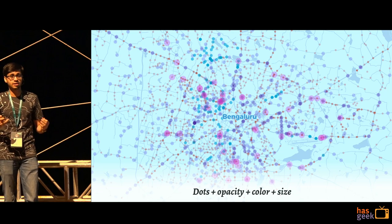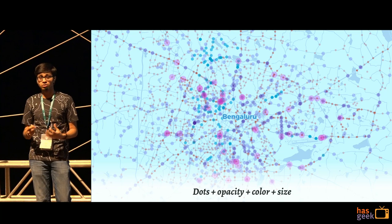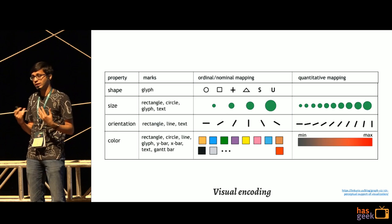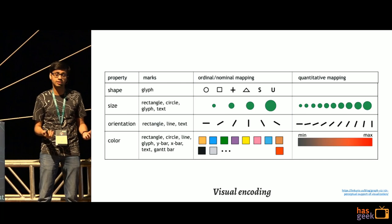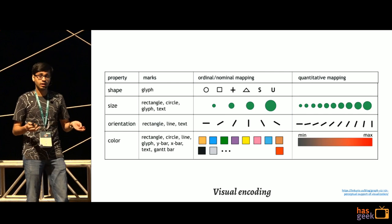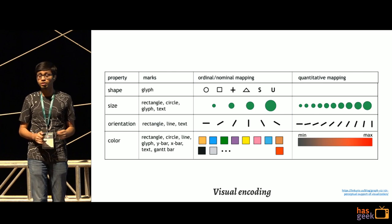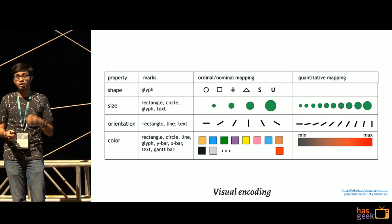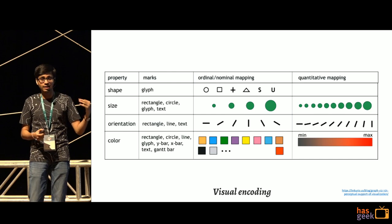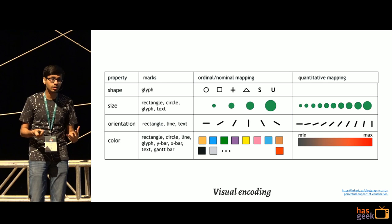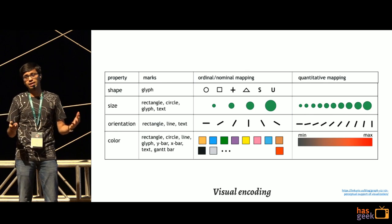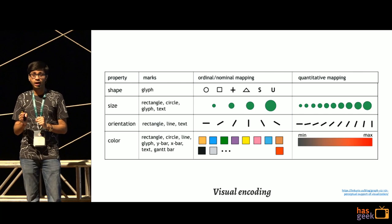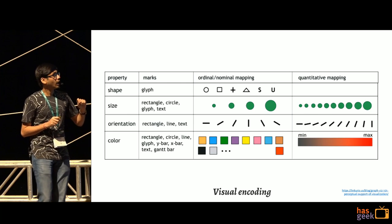What we just did is essentially picking visual encodings — different variables applied in the map style. You can change color, size, direction, and more. There's a lot of literature on this — different ways to take a form on a map and let data denote different things. Feel free to look this up; there are many good explanations available.